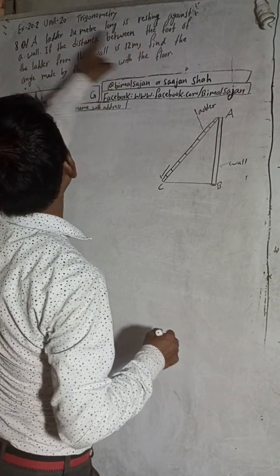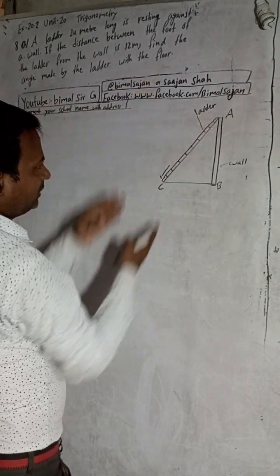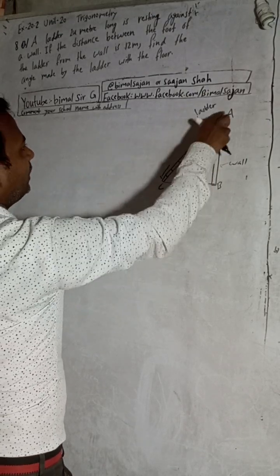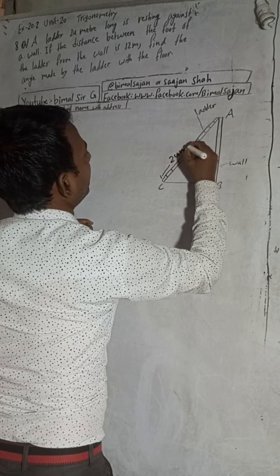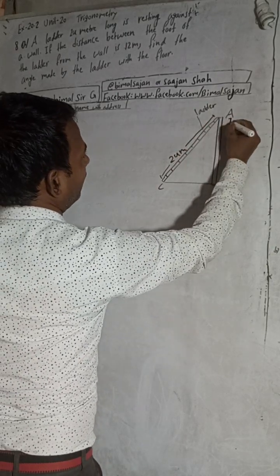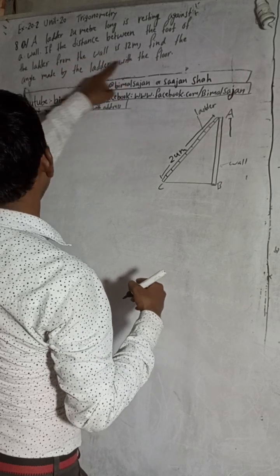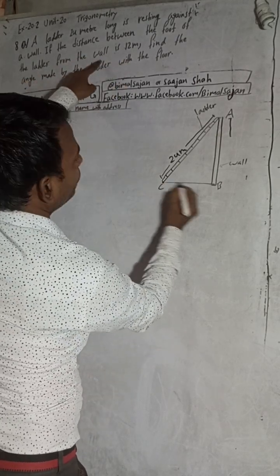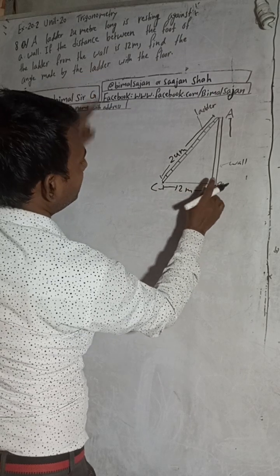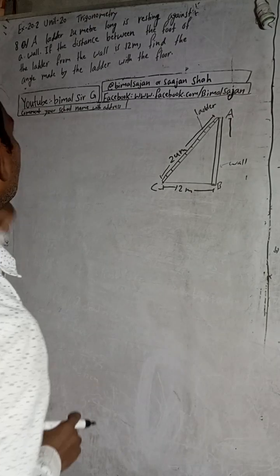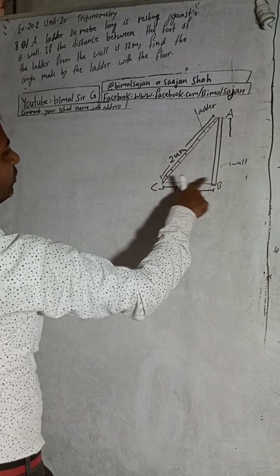A ladder 24 metres long is resting against a wall. This is the wall, and this is the ladder — CD here. Find the angle made by this ladder with the floor, and the distance between the foot of the ladder and the wall.